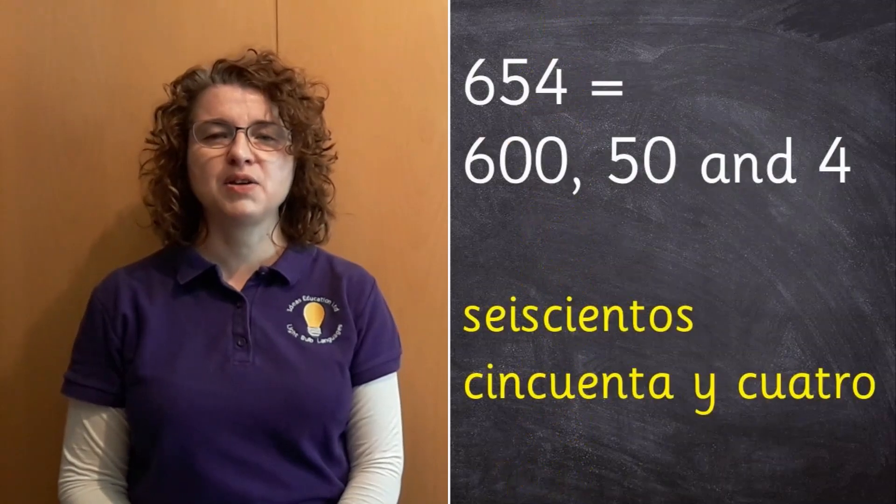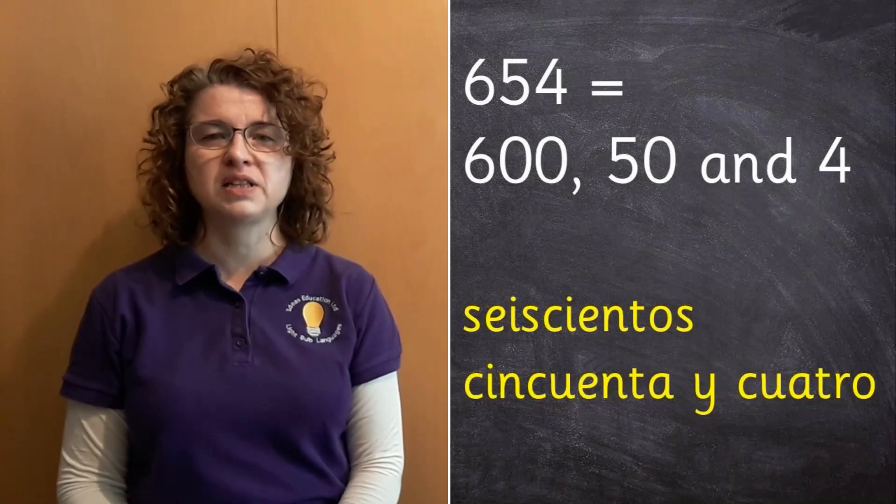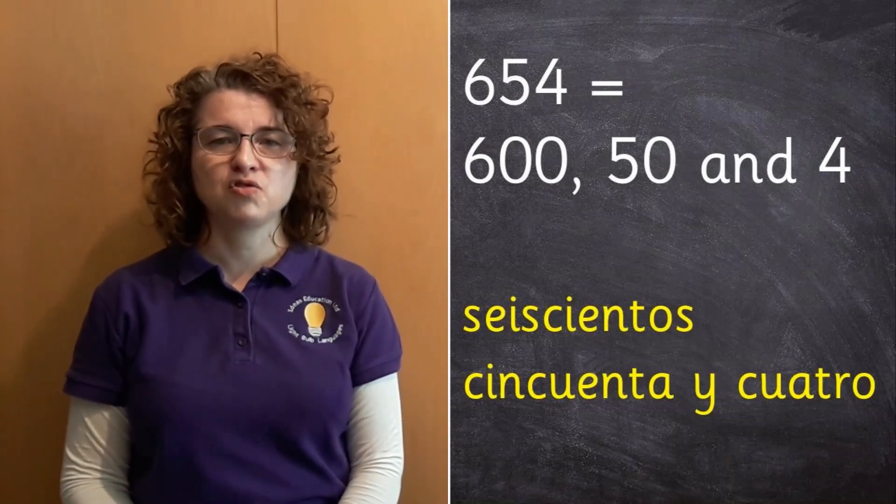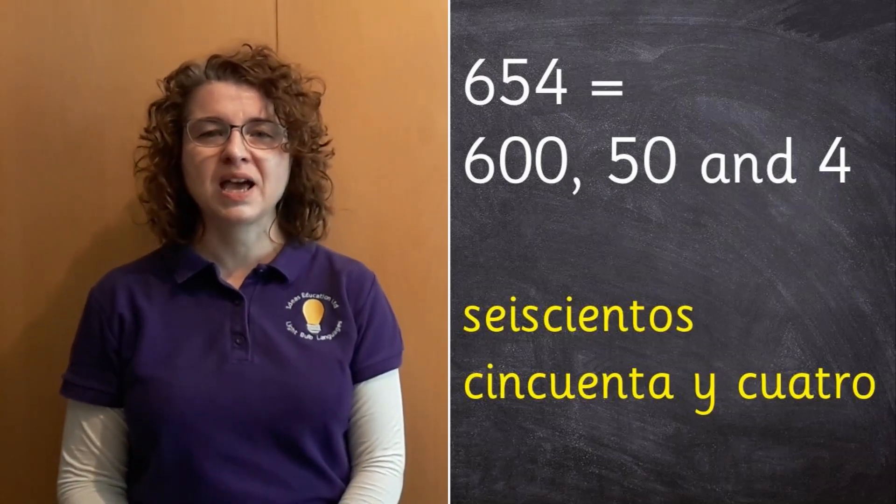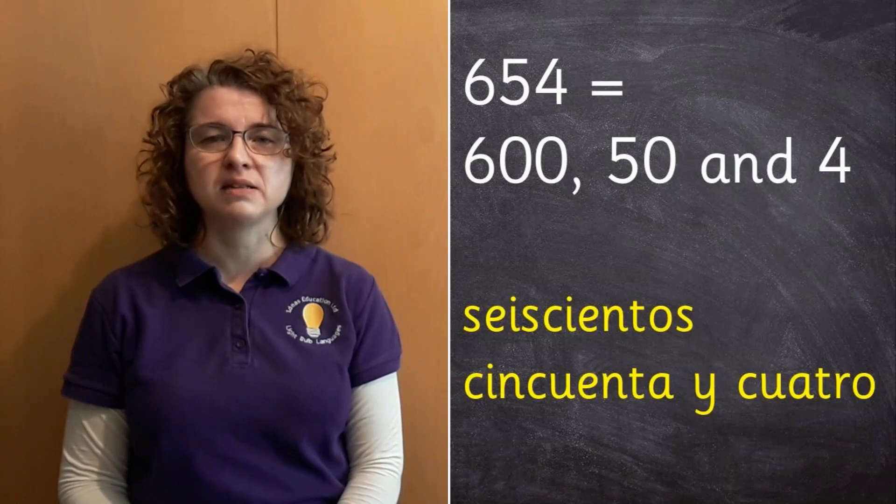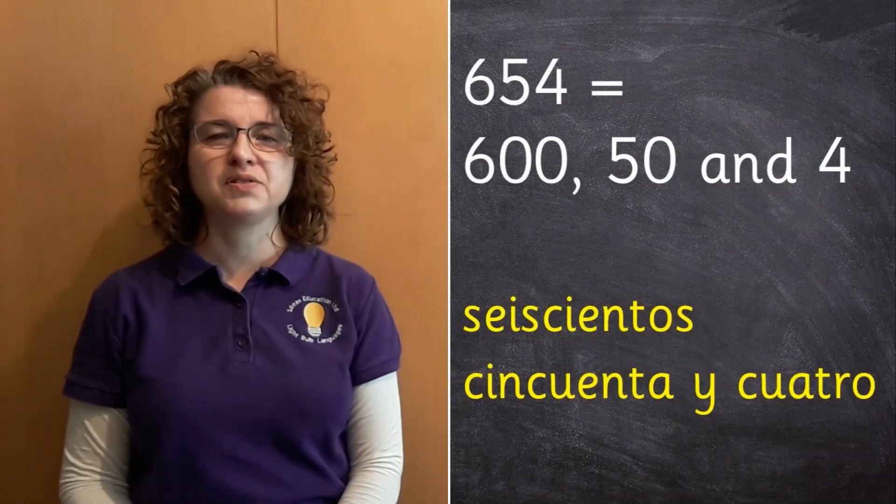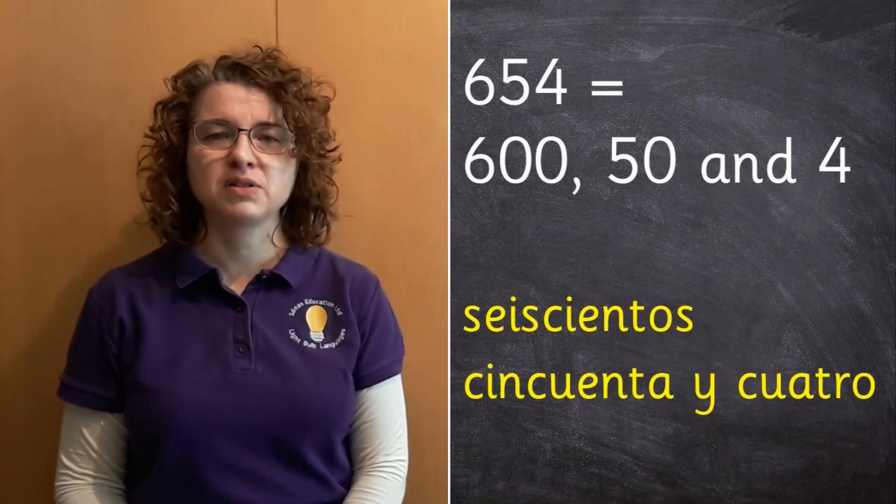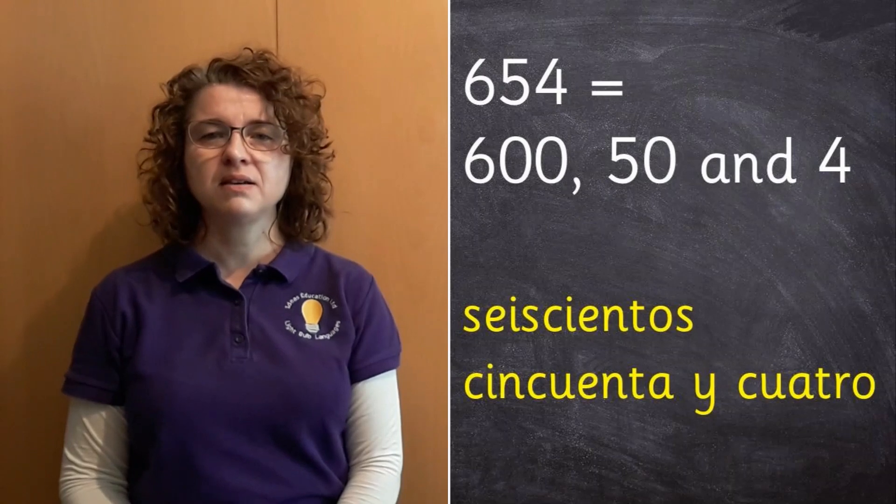So let's see how you would put numbers together using these hundreds words. First of all, if you wanted to say this one, six hundred and fifty-four, you would really need to say six hundred, fifty and four. Even though in English we put the and between hundreds and tens, in Spanish you're only allowed to put the and, the y, between tens and ones. So six hundred, fifty and four. That comes out as seiscientos, cincuenta y cuatro.